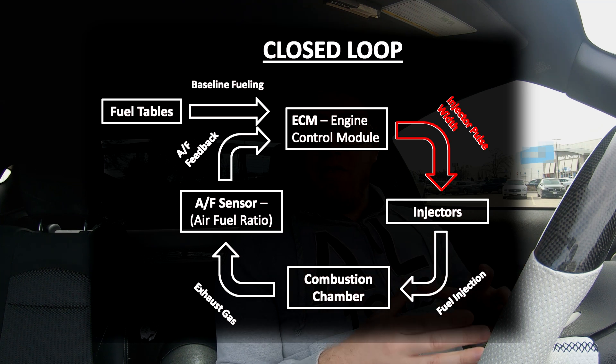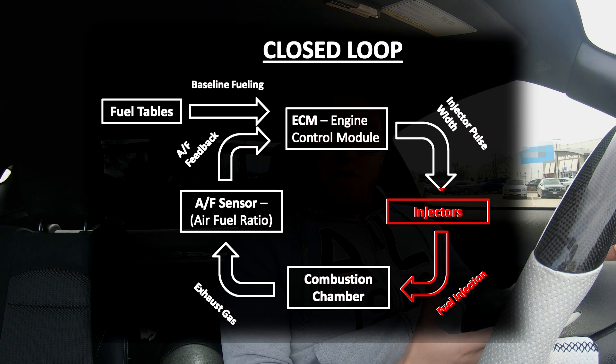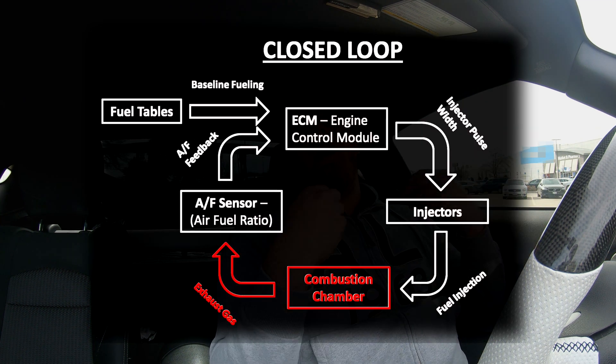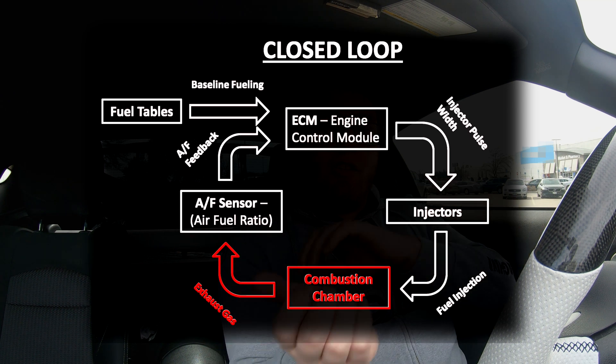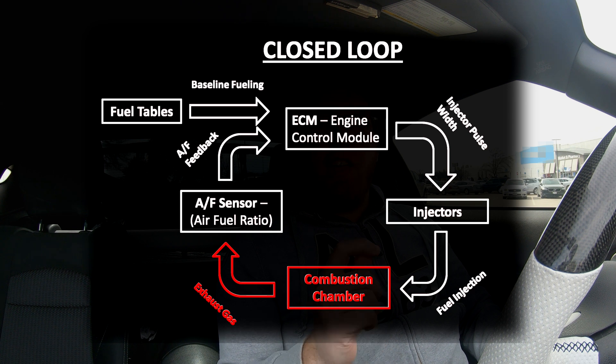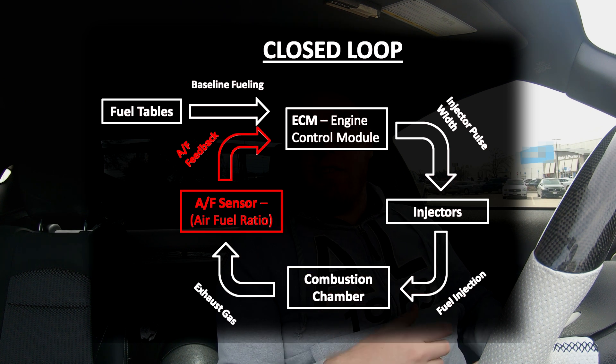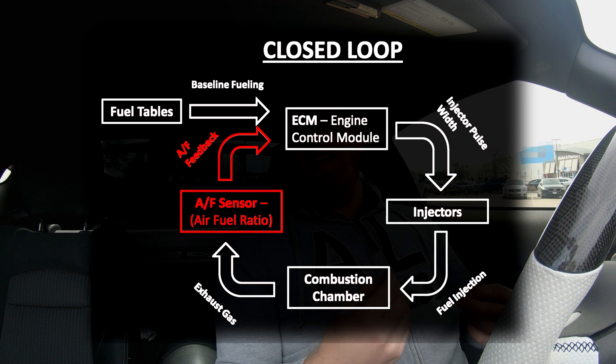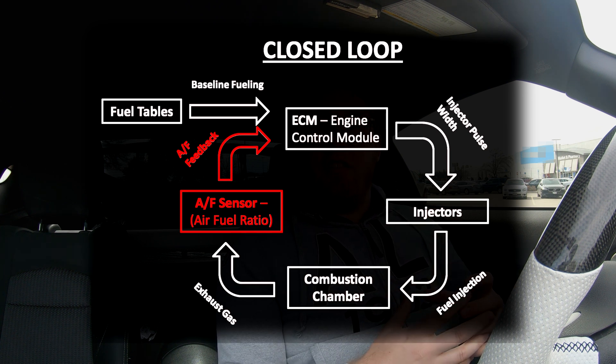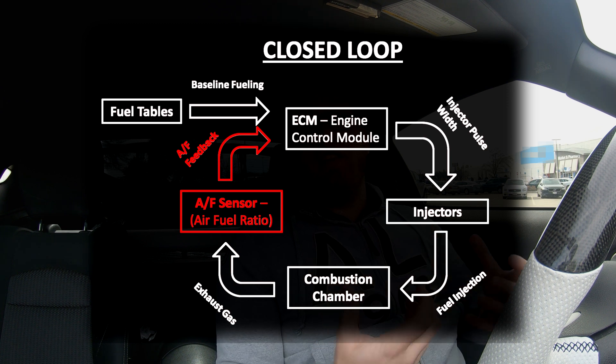The engine controls how much fuel enters by modulating the pulse width of the injectors — how long the injector is open during each cycle. A long pulse width means a lot of fuel, for instance during a heavy pull, while a short pulse width is used when less fuel is needed, such as at idle or cruising. After fuel is injected, combustion occurs and exhaust gases travel through the exhaust pipe, where the O2 content is picked up by your AFR sensor.